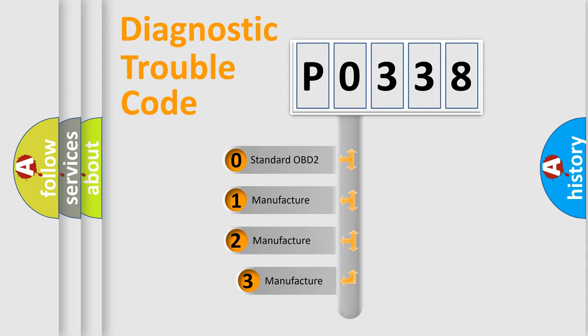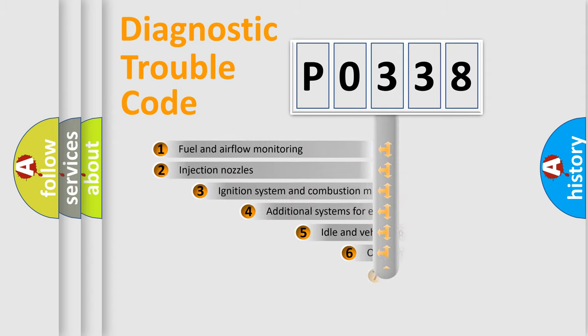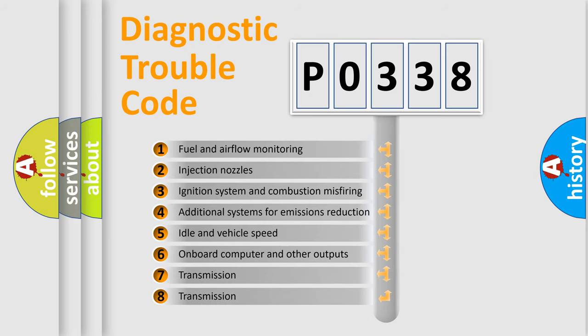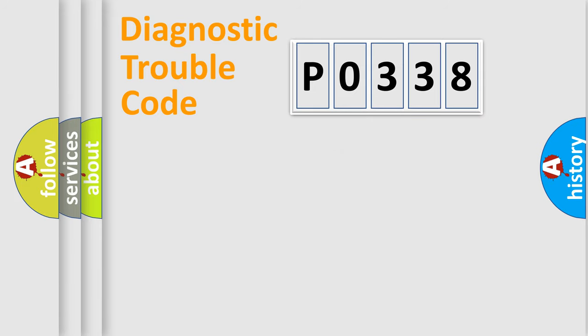If the second character is expressed as zero, it is a standardized error. In the case of numbers 1, 2, or 3, it is a more prestigious expression of the car-specific error. The third character specifies a subset of errors. The distribution shown is valid only for the standardized DTC code.